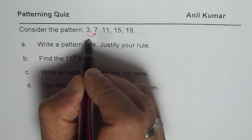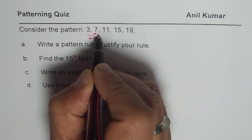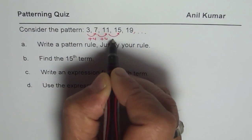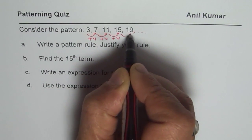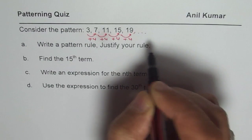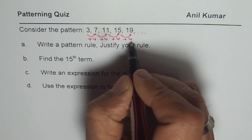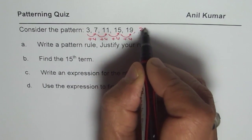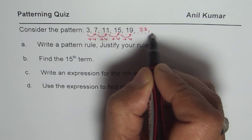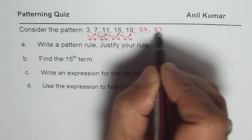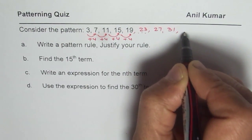What we note here is that we are adding 4 each time. So, if you add 4 each time, you get the next number, right? So, plus 4. So, if I follow this, the next number should be 19 plus 4, which is 23. 23 plus 4, 27. 27 plus 4, 31 and so on.